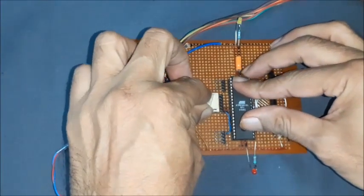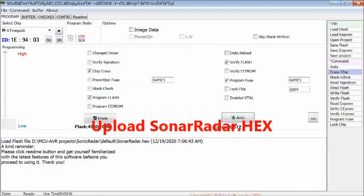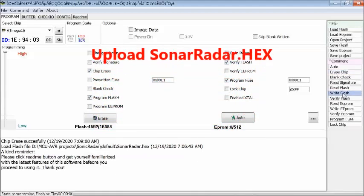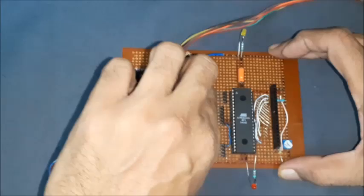Now connect 6-pin AVR programmer to ISP port. Then upload the sonar radar dot hex file to ATmega 16 microcontroller using suitable AVR program. Then disconnect the programmer.